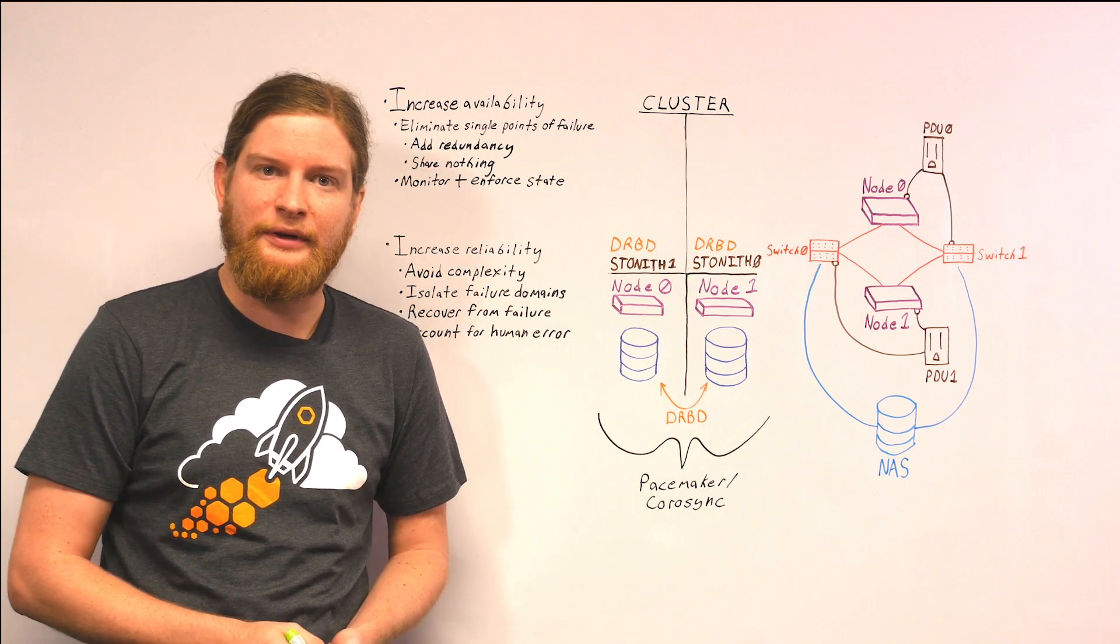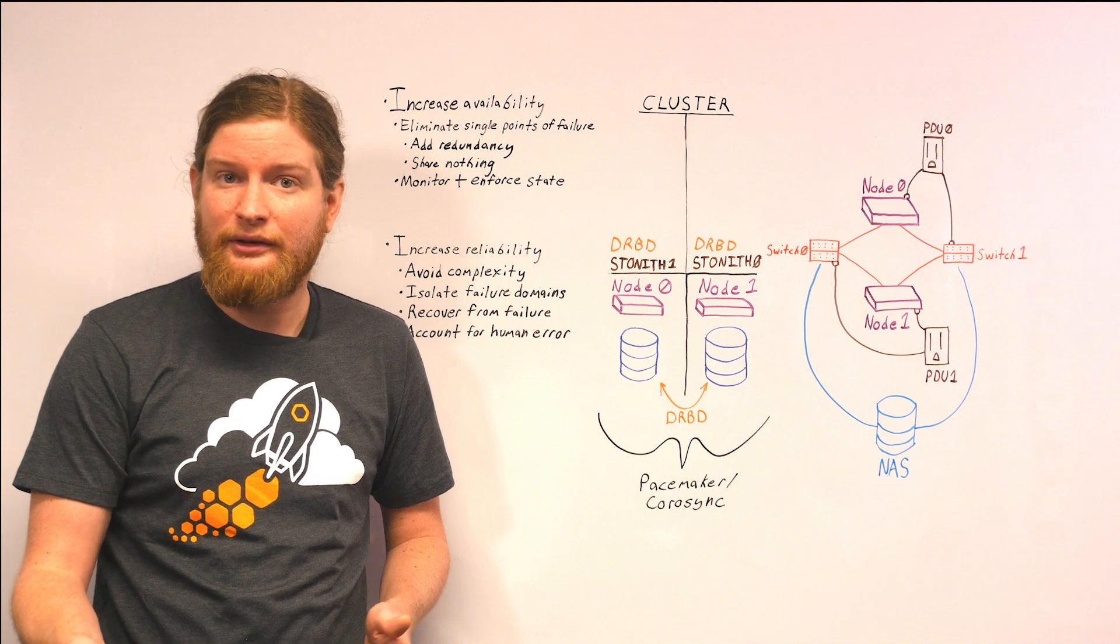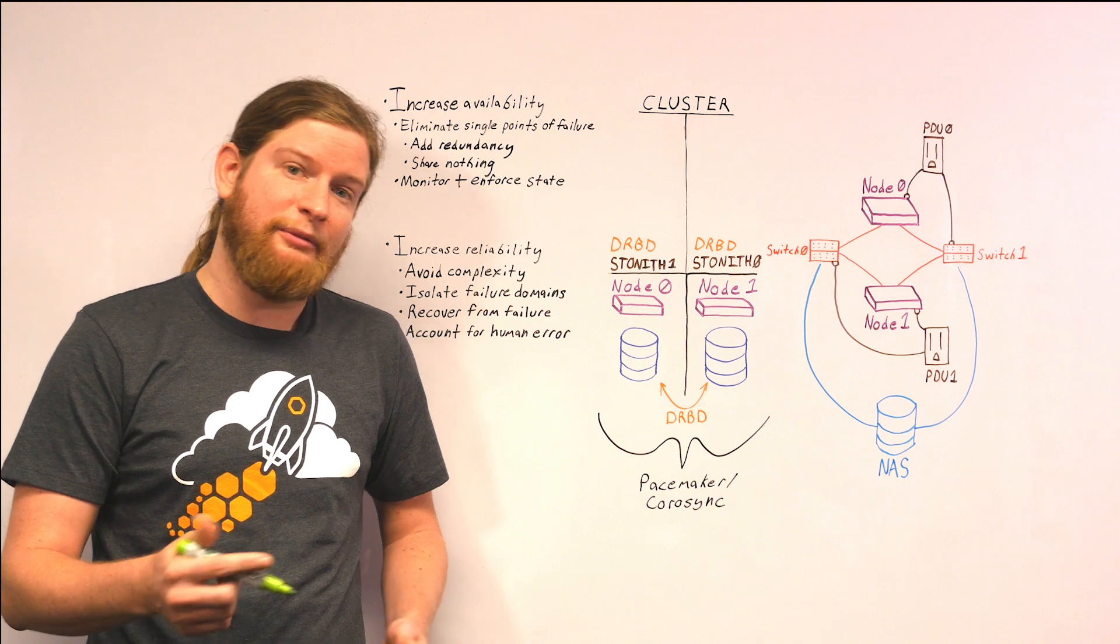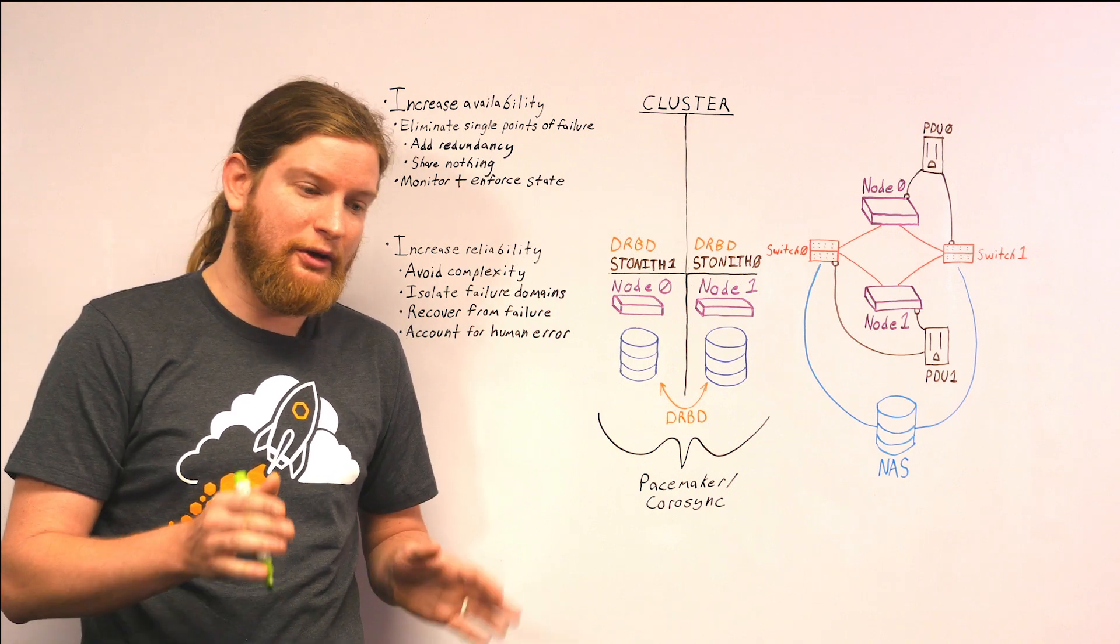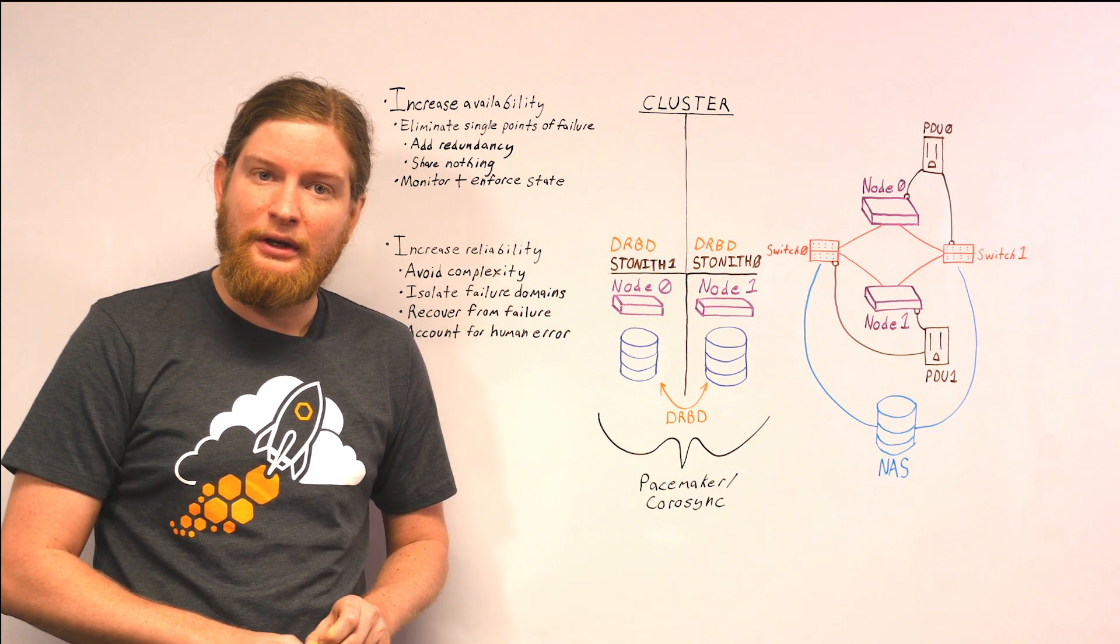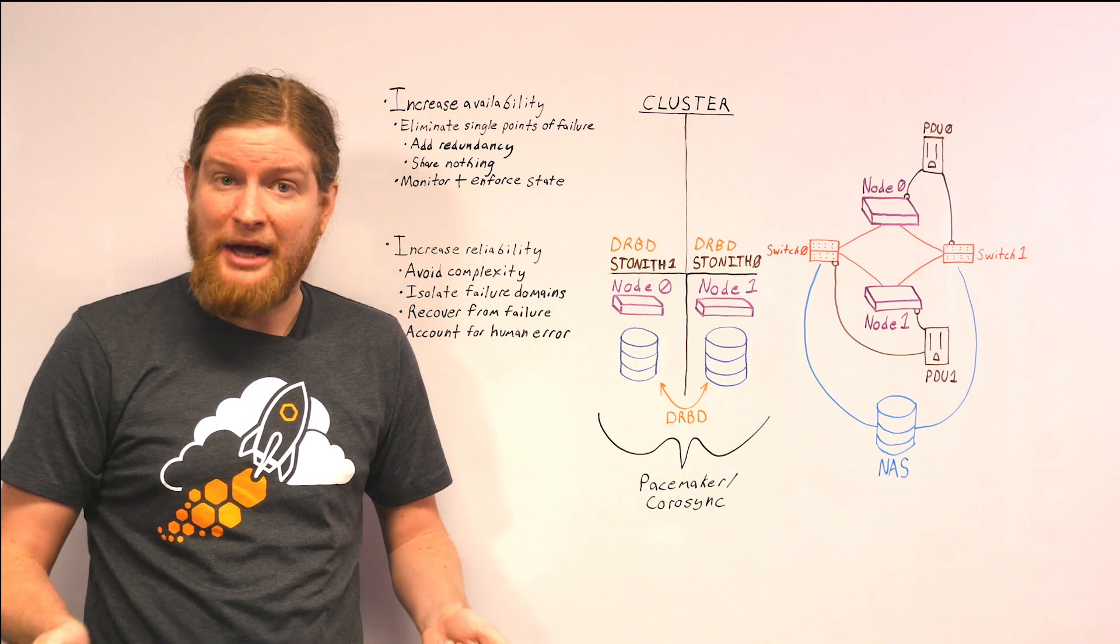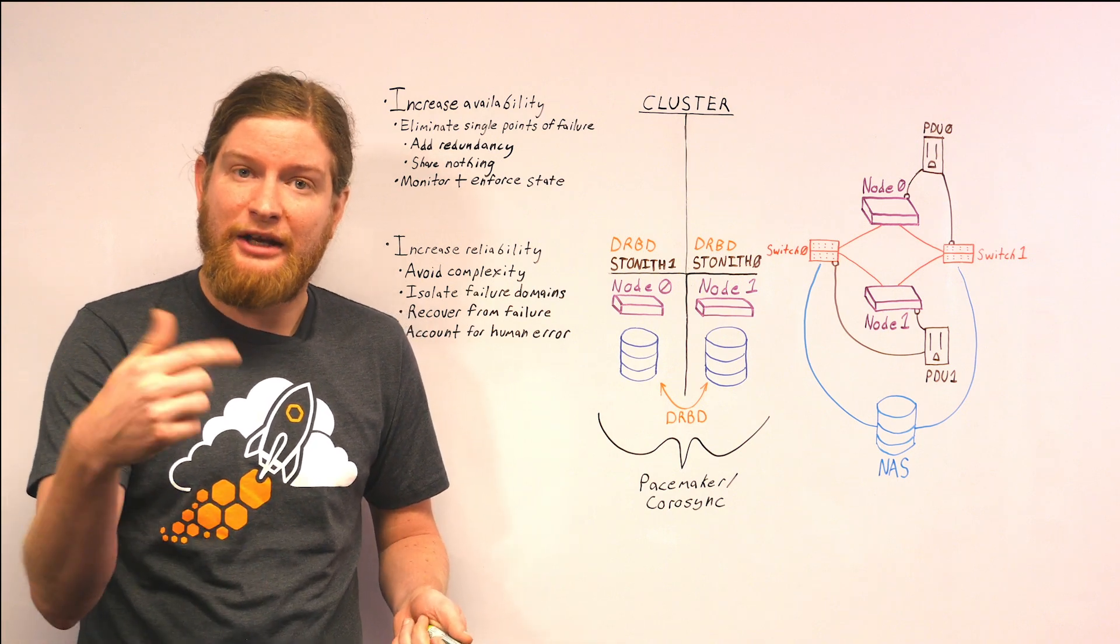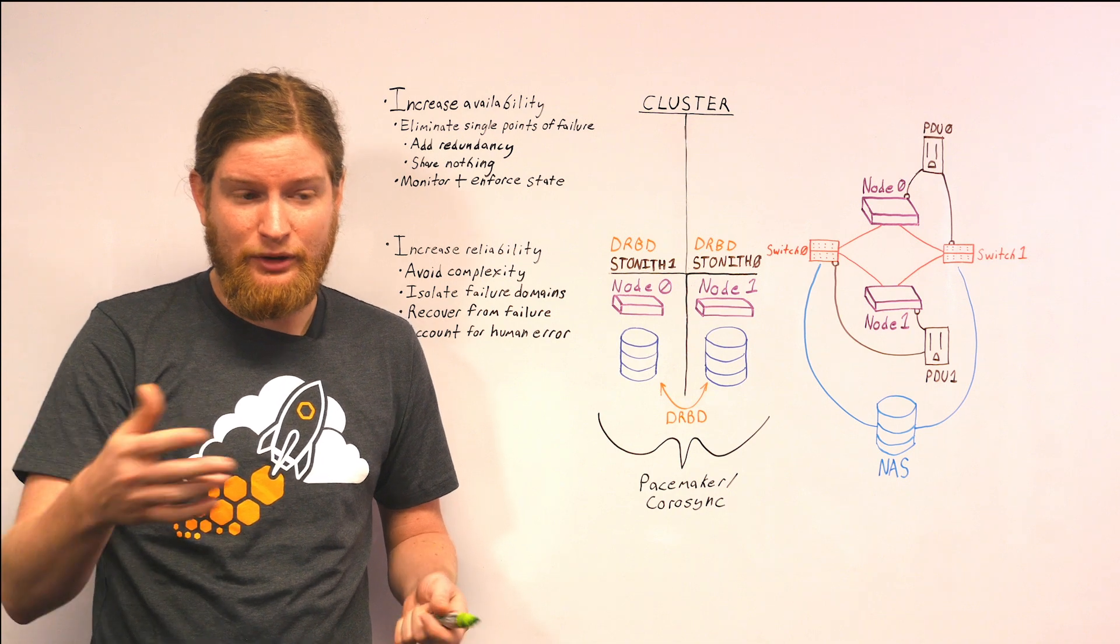There's technologies for dealing with this. You have RAID, which is a redundant array of disks that allows a single disk failure to not affect the system at all. You can do the same thing with power, with memory. Adding redundancy to a system is a great way to deal with failures, to make failures not matter anymore, or at least make them not take your application down. Because that's what really matters is your application, your user experience.